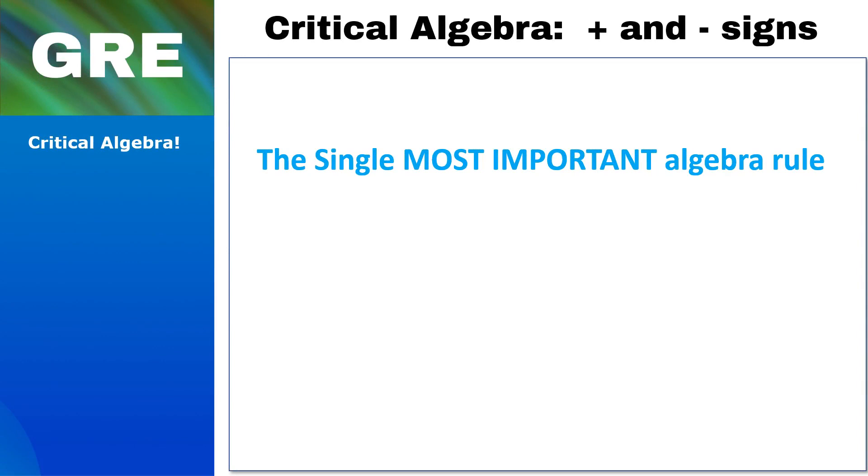Okay, this is the single most important, most crucial algebra rule to know. It gets tested all the time on all sorts of questions, especially on exponents. On the test, plus and minus signs mean factor, and that simple rule is going to score you a ton of points, and I'm going to show you why.